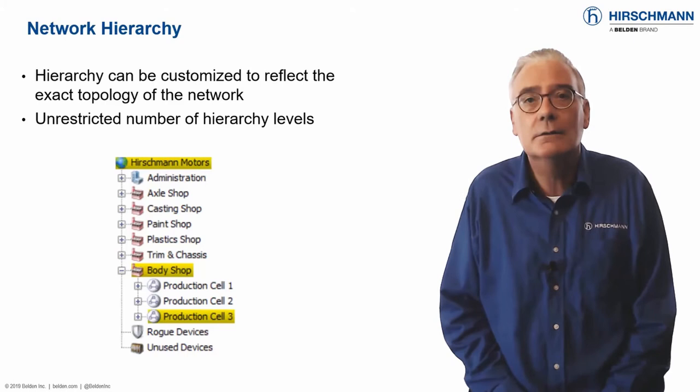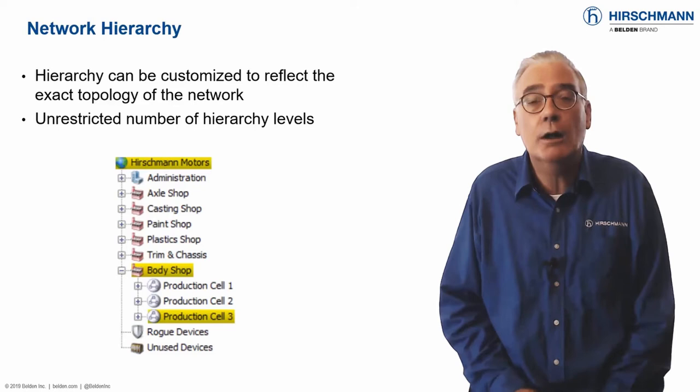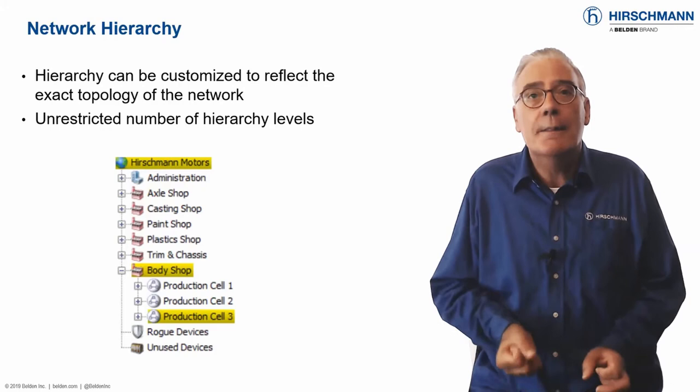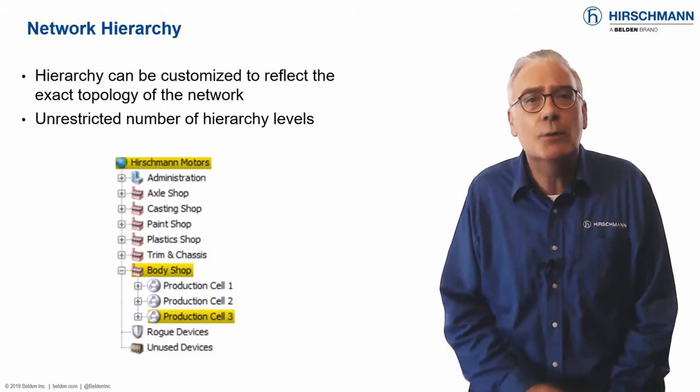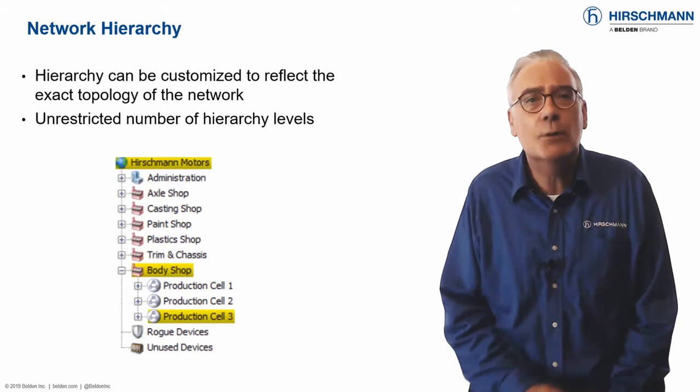The display is active, so it also represents the status of the network components. The status is propagated up the tree, meaning the tree does not need to be permanently expanded. The status of a higher level will always depict the worst-case status of a lower level, so you will never need to waste time searching for a network fault.